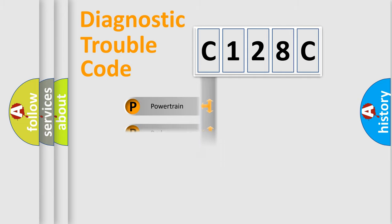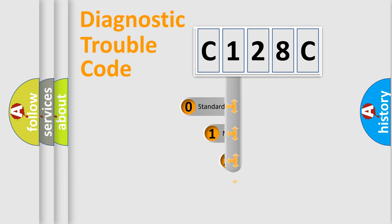Powertrain, body, chassis, network. This distribution is defined in the first character code.